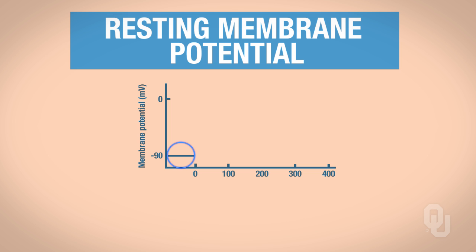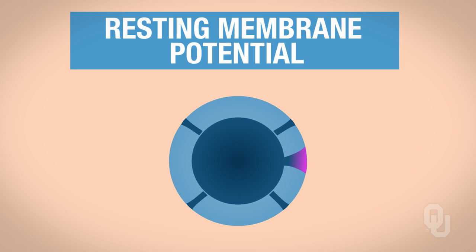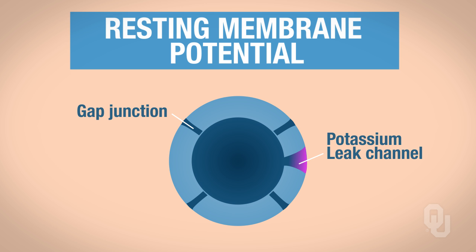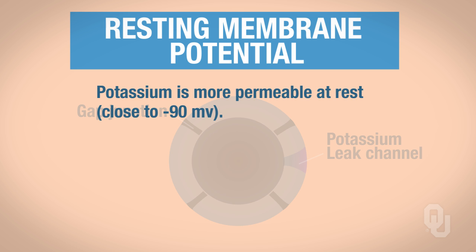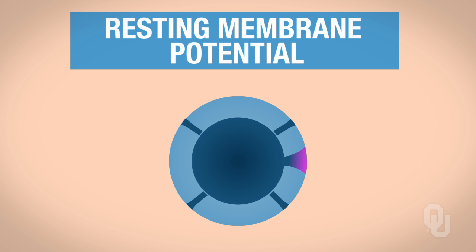At negative 90 millivolts, I'm going to draw a cardiac contractile cell. Remember that this cardiac contractile cell has gap junctions. Along with those gap junctions are your leak channels. The only leak channel I'll include is the potassium leak channel, because potassium is more permeable at rest, close to negative 90 millivolts, just as it is in a regular neuron. Potassium moves out of the cell.